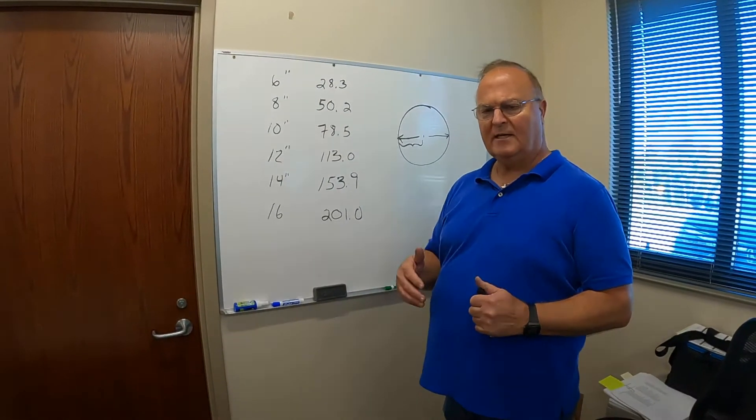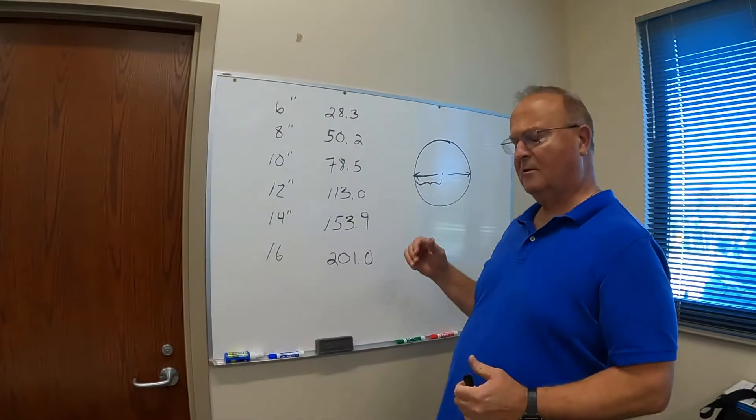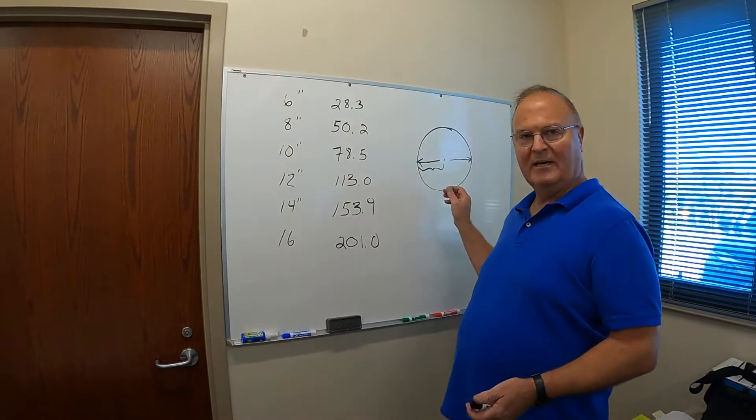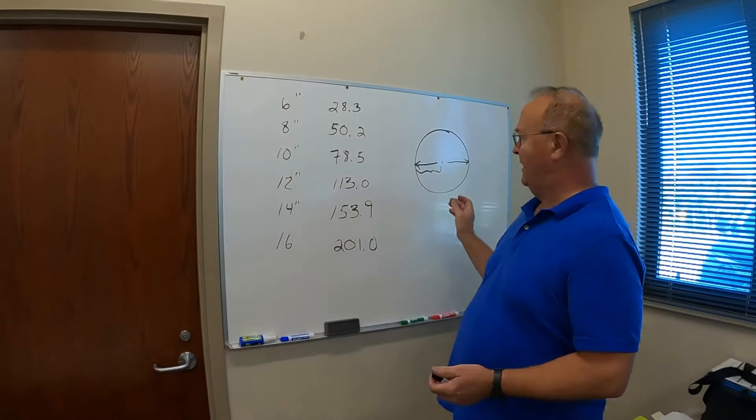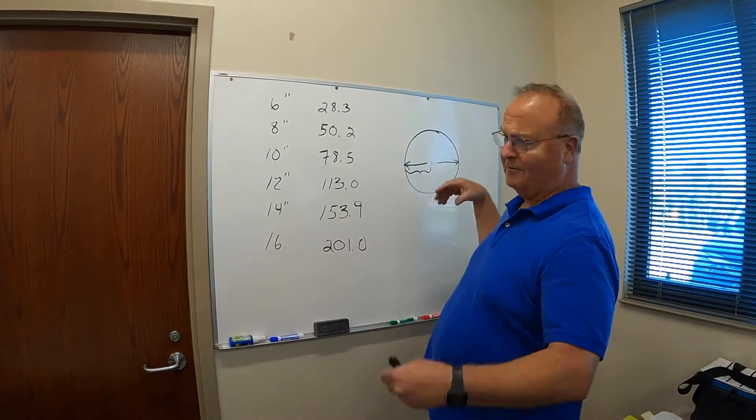One of the real common questions I get all the time is, do I have enough ducting? And I think people forget their high school algebra or geometry, figuring the area of a circle. The area of a circle is pi r squared, and you don't have to figure it out, I've got it all here for you.